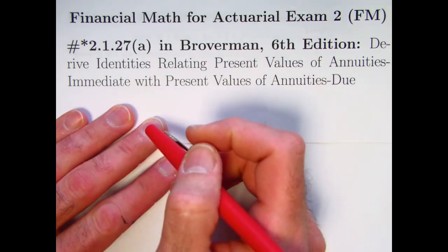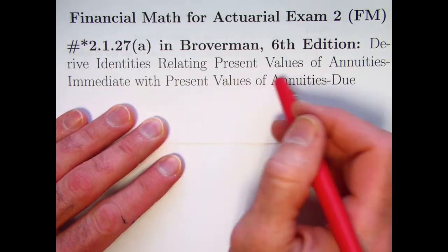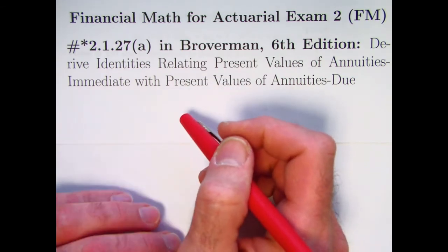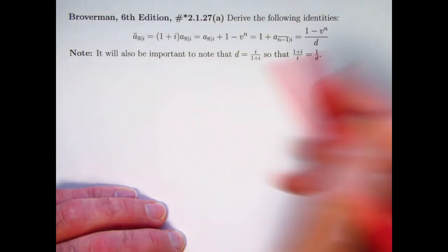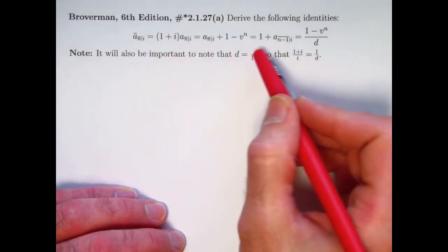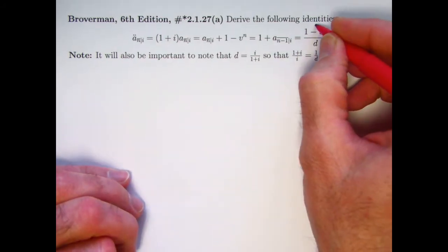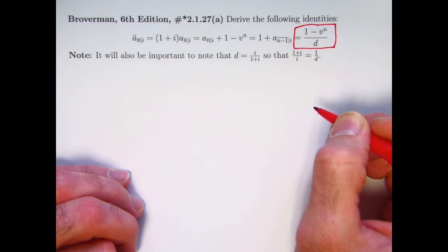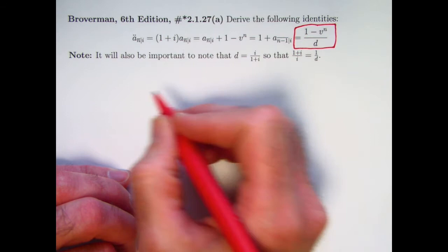We're going to derive some identities that are going to relate something we're used to — present values of annuities immediate — with something we're not so used to: present values of annuities due. The equality of all these things are the identities we want to derive. This last equality is not in the book's problem, but it's important enough that I thought it was worth including, and it's maybe even the most important thing that all these things equal.